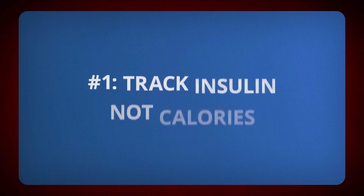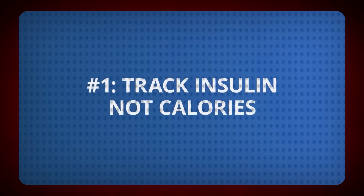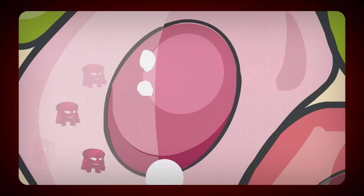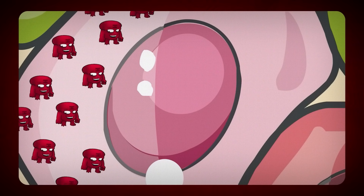Reversing insulin resistance takes these three rules. Number one: track insulin, not calories. You may have heard the rebuttal that your body does not count calories, and it's true, but it does not make you unaccountable. Instead of obsessing on calories in versus calories out, we need to focus on how much insulin your body is producing.